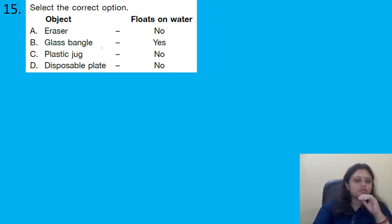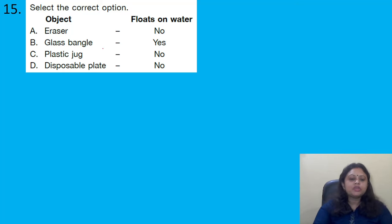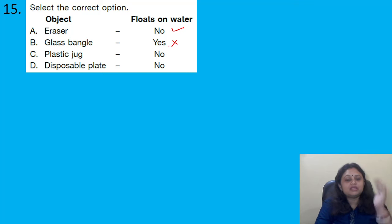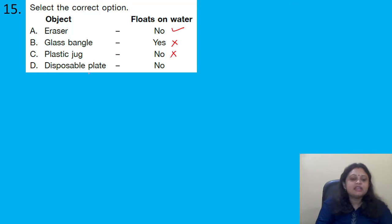Select the correct option about objects that float or sink in water. Eraser — does not float, so marking it as sinking is correct. Glass bangle — marked yes (floats), but actually it sinks — so that is incorrect. Plastic jug — marked no (does not float), but plastic floats — incorrect. Disposable paper plate — also floats — so marking no is incorrect. The correct answer is option A.